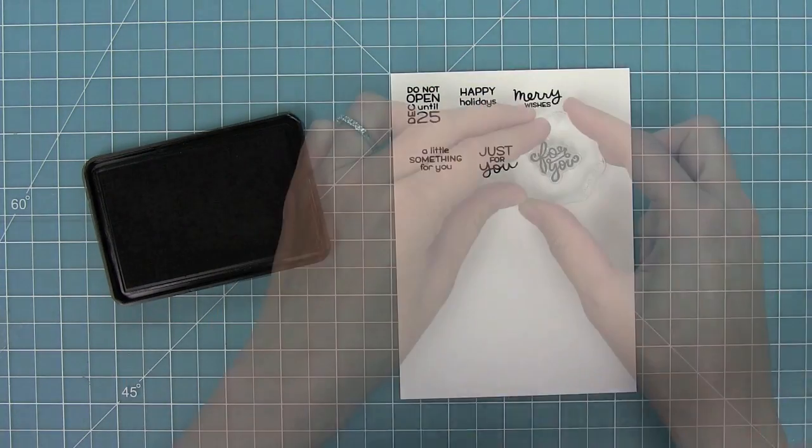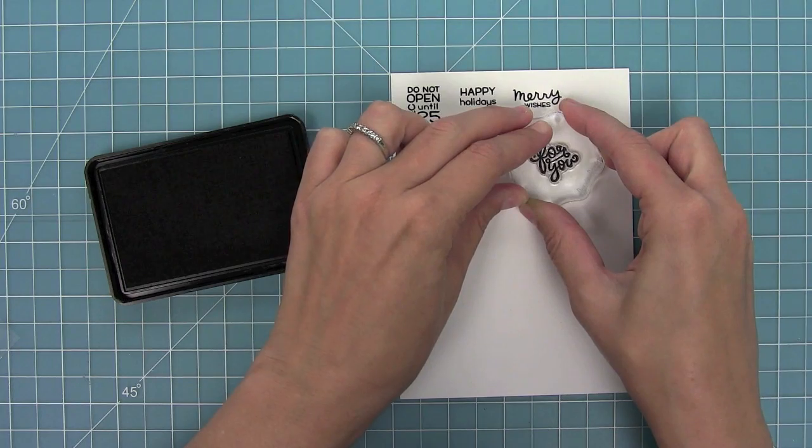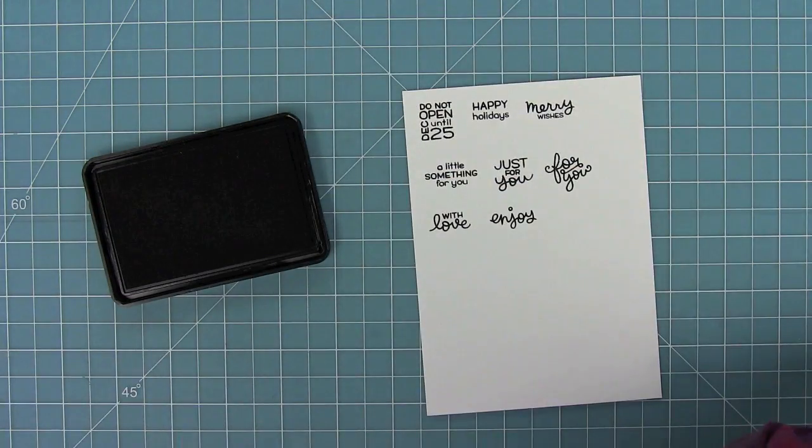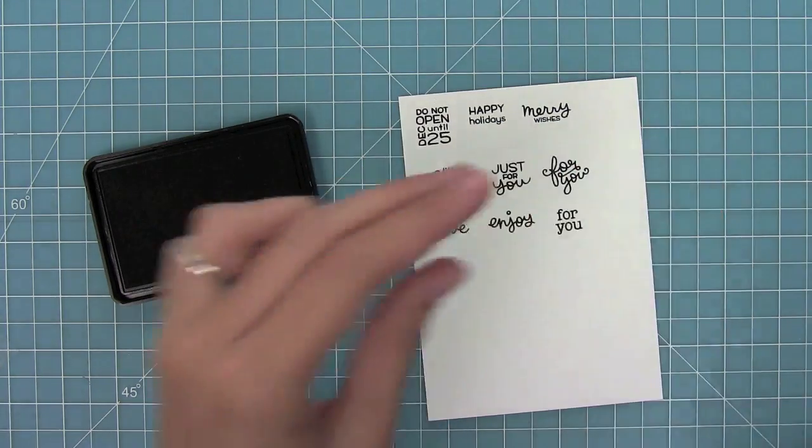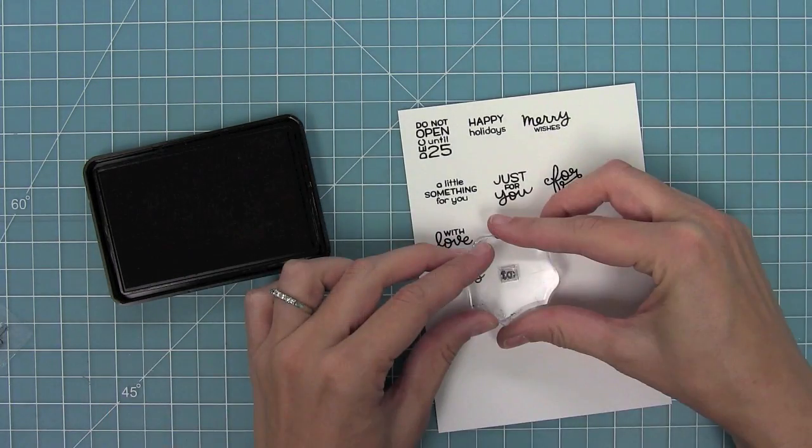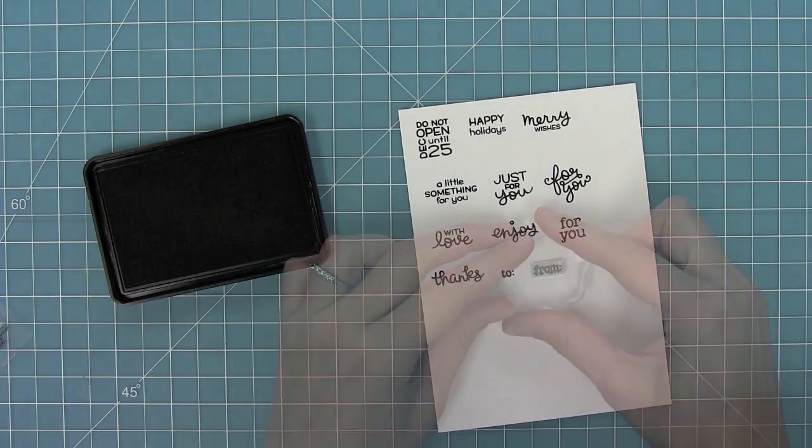So we have a little something for you, just for you, a pretty scripty for you, with love, enjoy, and then a nice typeset for you. Then we have Thanks, and we have To, From, and Love.